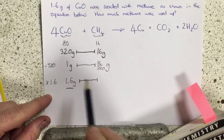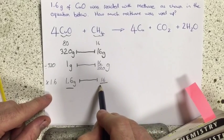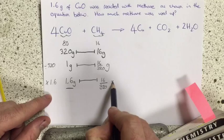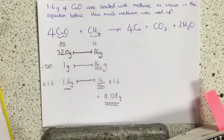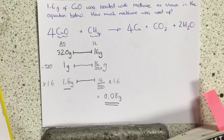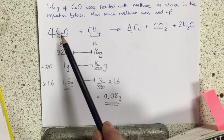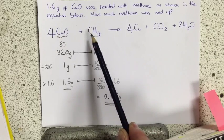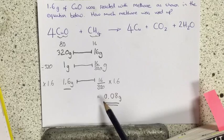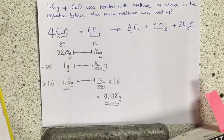Now I've multiplied the left by 1.6 so I'm also going to multiply the right by 1.6. That comes out as 0.08 grams of methane. Now that doesn't seem like very much, but what you've got to bear in mind is that our copper oxide is much, much heavier. A molecule of copper oxide is much heavier than a molecule of methane. So it's not really surprising that we only need a very small amount to react with 1.6 grams.